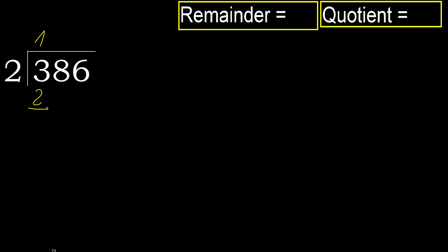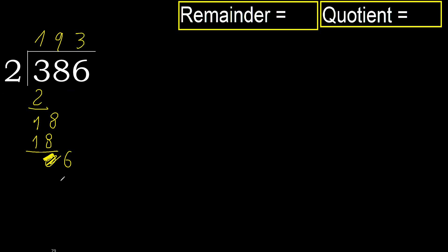3 minus 2 is 1. Bring down 8 to get 18. 2 multiplied by 9 is 18 — 18 is not greater. 18 minus 18 is 0. Bring down 6 to get 6. 2 multiplied by 3 is 6 — 6 is not greater. Subtract: 6 minus 6 is 0.